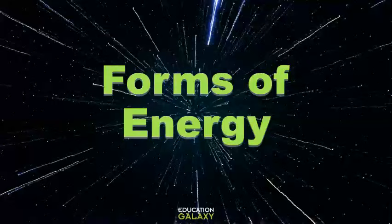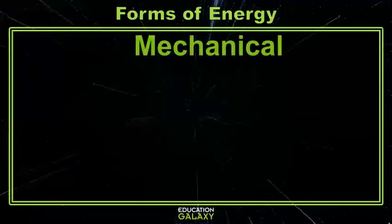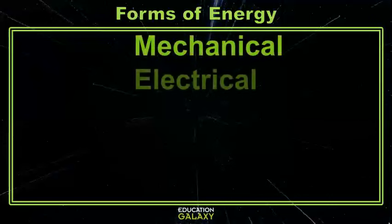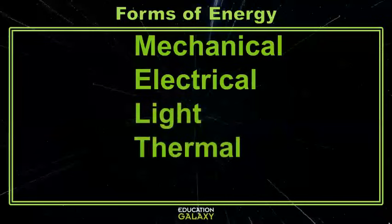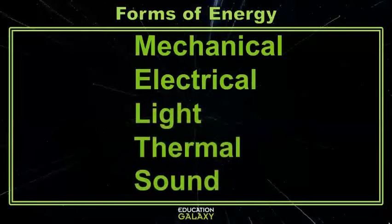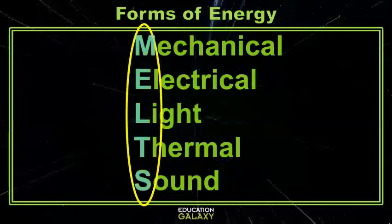Hey scientists, let's take a moment to talk about energy. Energy is just the ability to do work. Energy comes in several different forms, but let's focus on five different forms today: mechanical, electrical, light, thermal, and sound. An easy way to remember these five forms of energy is with the acronym MELTS. Let's take a closer look at each form.